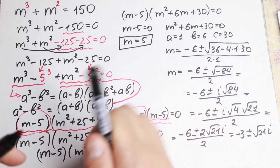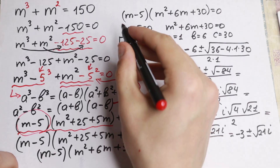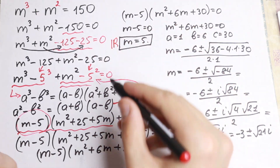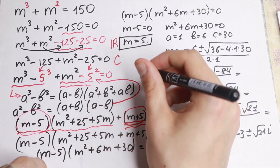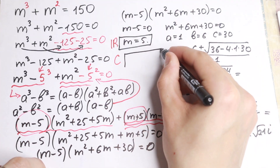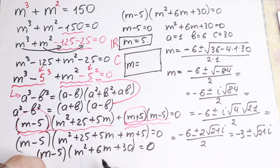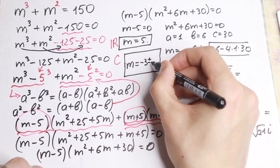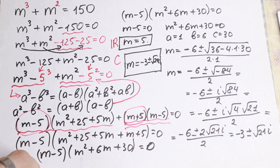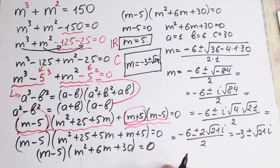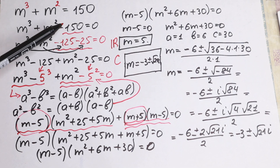Dividing each term by 2, we get m equals minus 3 ± i√21. This is our complex root. So our real number root is m equals 5, and the complex roots are m₂,₃ equals minus 3 ± i√21. The key trick in this problem was writing 150 as 125 plus 25, allowing us to apply the difference of cubes and difference of squares formulas.